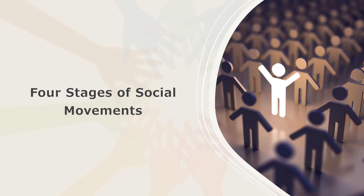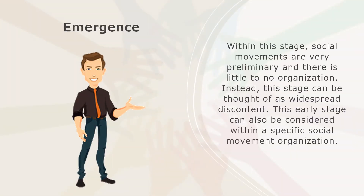There are four stages of social movements: Emergence, Coalescence, Bureaucratization, and Decline. In the Emergence stage, social movements are very preliminary and there is little to no organization. Instead, this stage can be thought of as widespread discontent. This early stage can also be considered within a specific social movement organization — an organization that is or has been associated with a social movement, which carries out the tasks necessary for any social movement to survive and be successful.